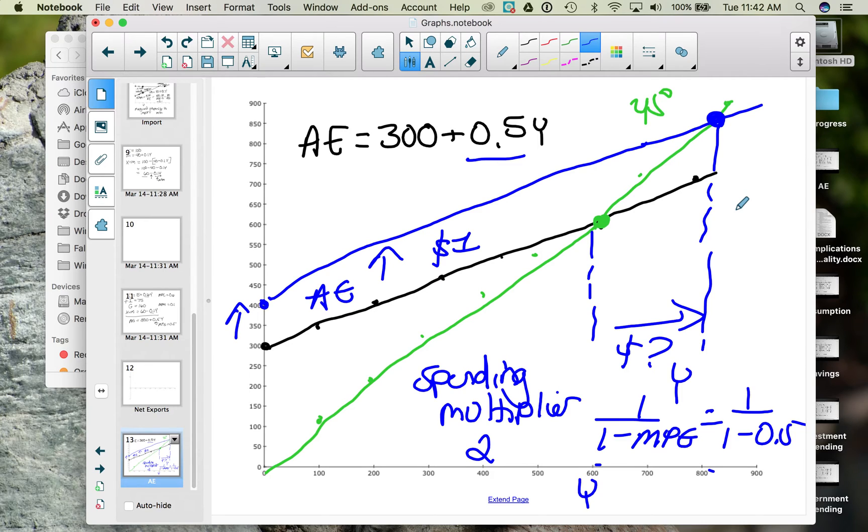If in your economy, your spending multiplier is 2, then the government spending $1,000,000 shifts up the aggregate expenditure function, we're spending more, and it increases national income, so we're at this new equilibrium, by 2 times that. Government spends $1,000,000, it stimulates and grows the economy to $2,000,000.